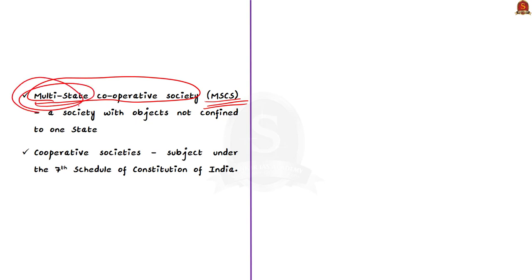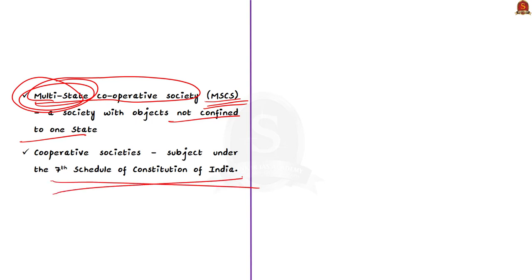A Multi-State Cooperative Society is a cooperative society not confined to one state. Cooperative society is a state subject under the 7th Schedule of the Constitution of India. These are the basic points regarding cooperative societies. Without understanding cooperative societies, we cannot fully understand cooperative banks.